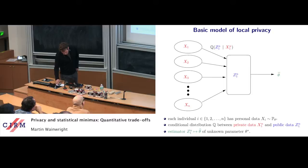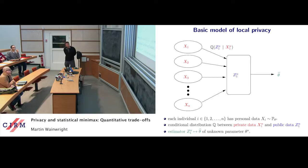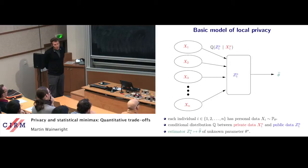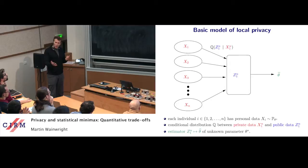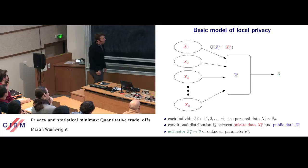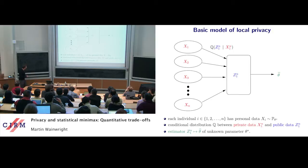What we're going to study is called local differential privacy — that's the new name for it. Some people call it survey sampling privacy because Warner in the 1960s, a statistician collecting survey data, argued that if you ask a sensitive question like 'are you HIV positive?', to protect the individual you should randomize a little — flip the answer with some small probability. We're going to see that survey sampling mechanism is a particular case of this more general model of local privacy.